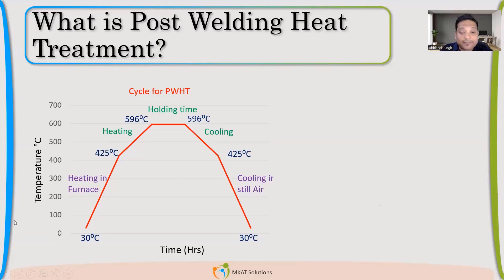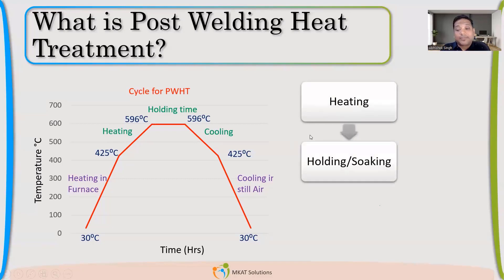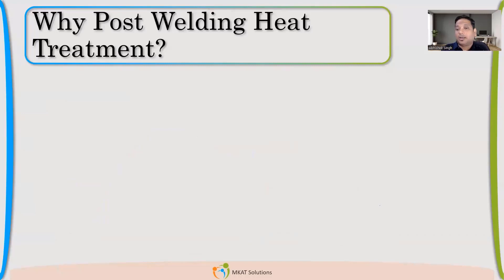There are certain rates which must be maintained for post-weld heat treatment — a certain temperature difference between parts that must not be exceeded. Typically, the post-weld heat treatment cycle involves: we heat the material in the furnace, hold it for some time — which is also called soaking — so that the intended recrystallization is complete, and then we cool it down. That is post-weld heat treatment: heating, then holding or soaking, and then cooling.